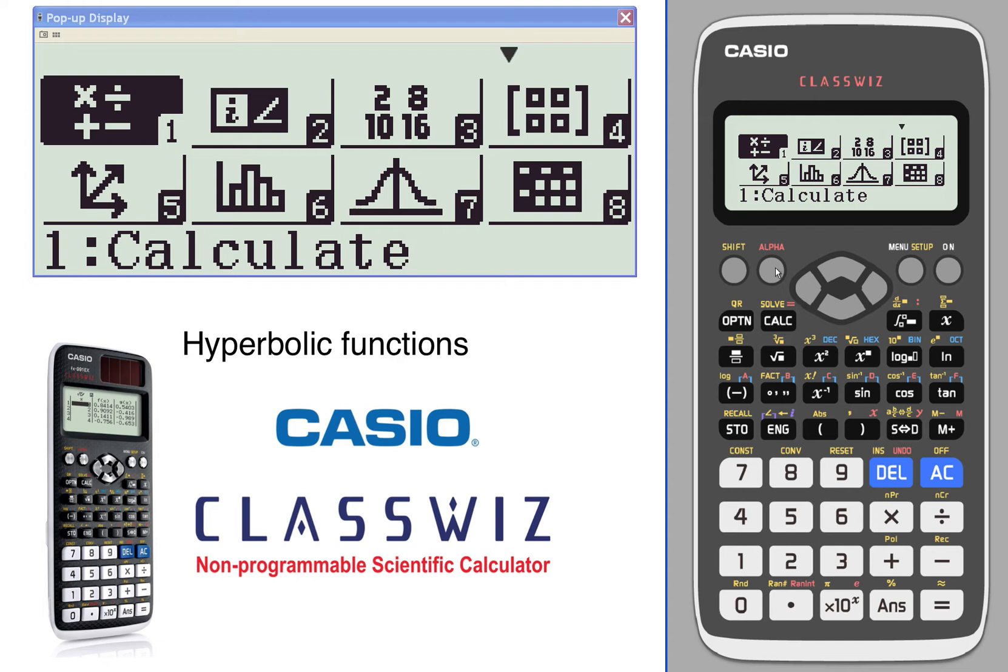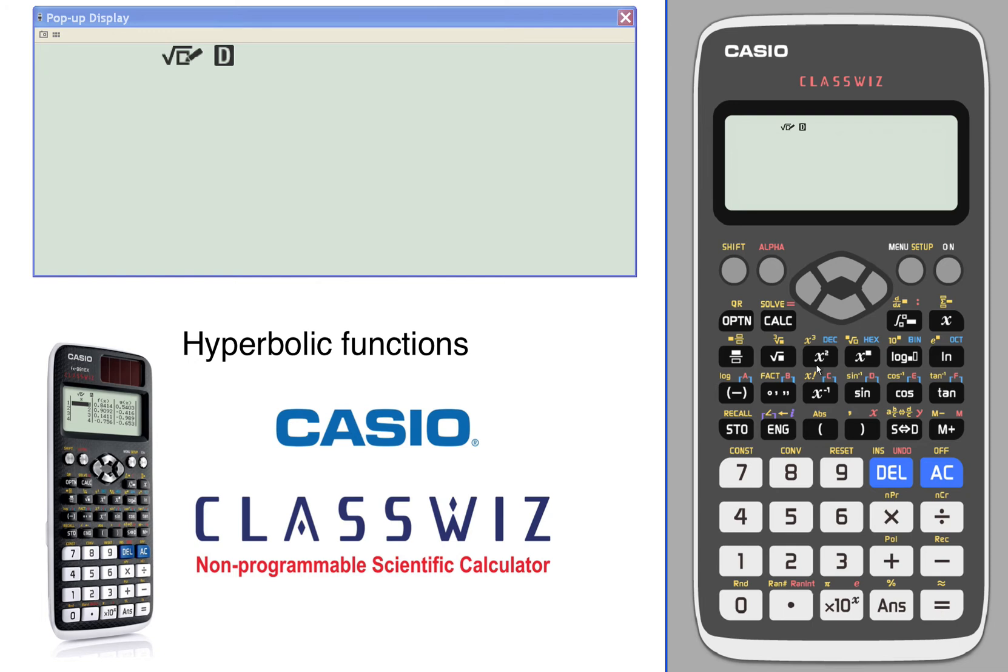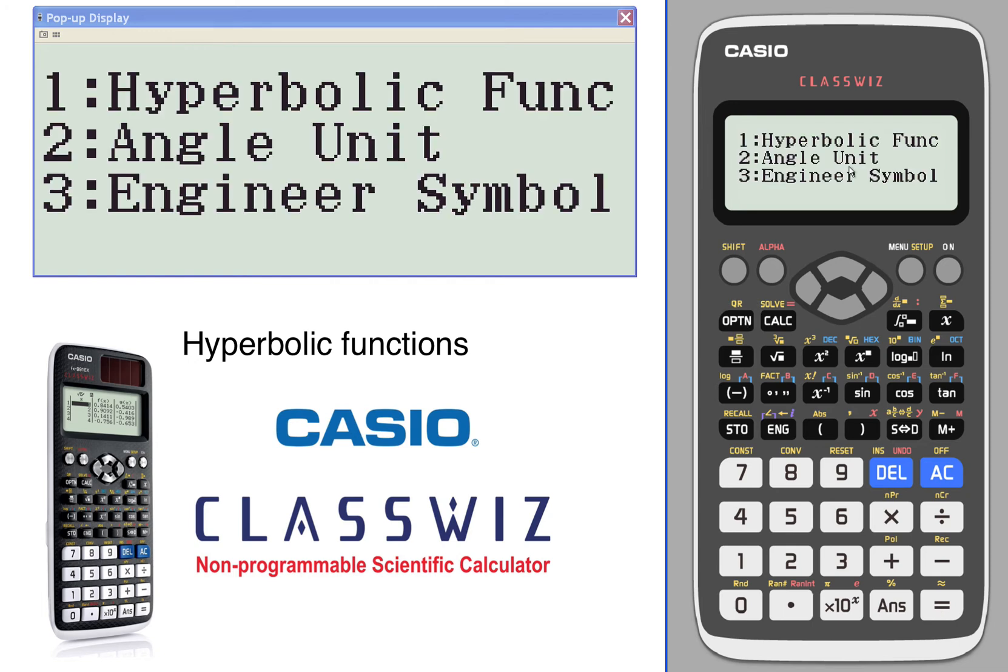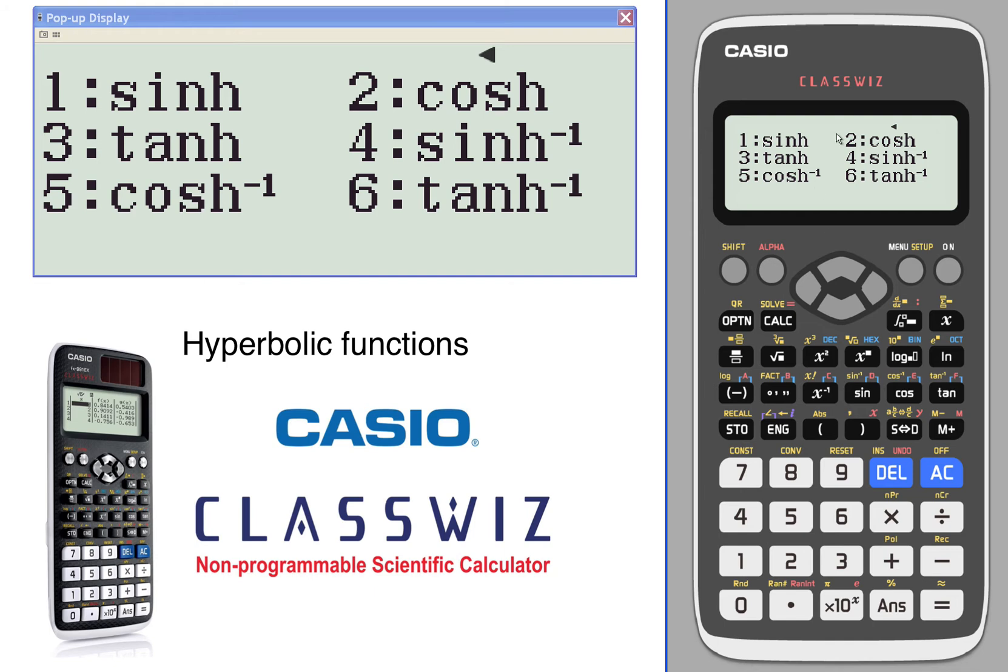Hyperbolic functions are found under calculate. We'll enter one under options. Our very first option is hyperbolic functions: hyperbolic sine, cosine, and tangent, and the arc hyperbolics. Hyperbolic sine is e to the x minus e to the negative x over 2.